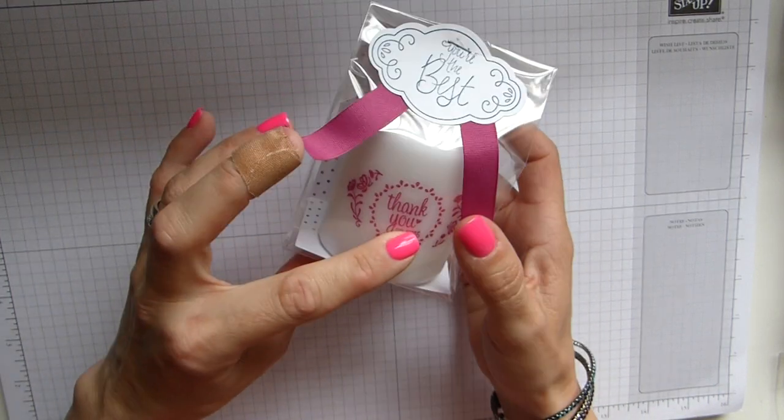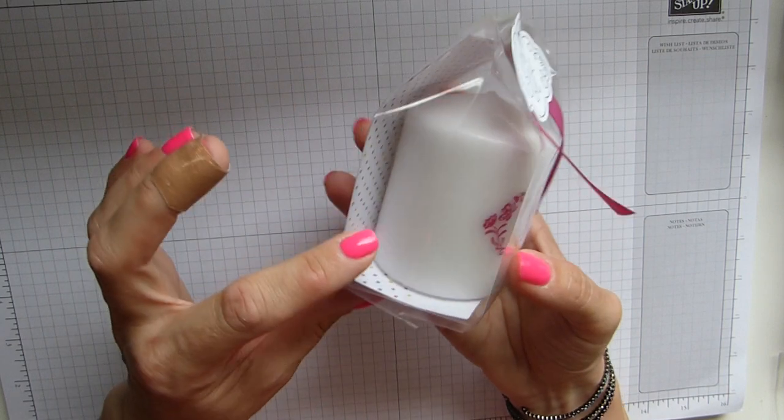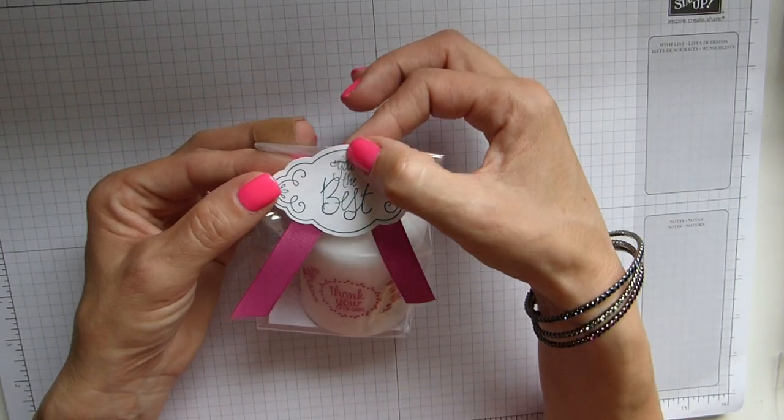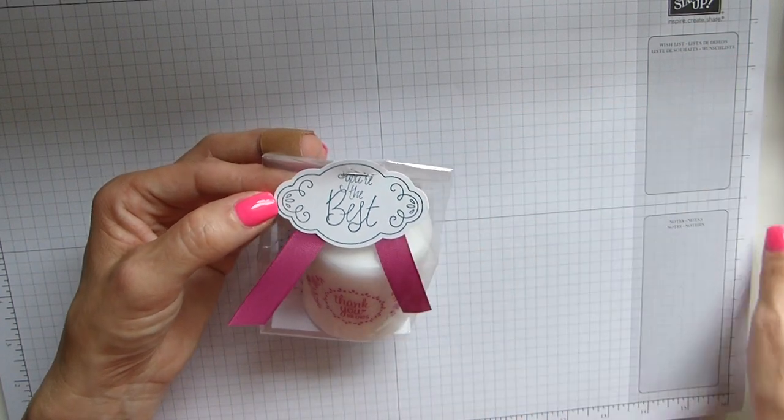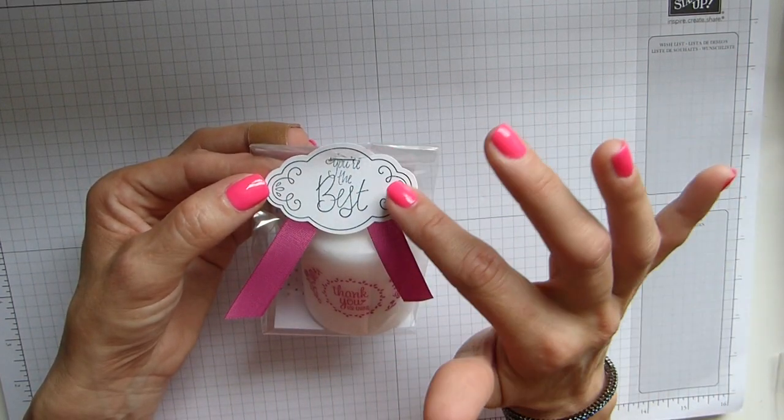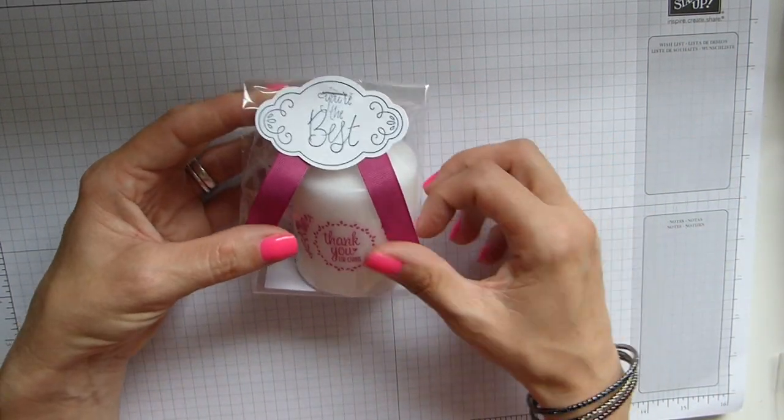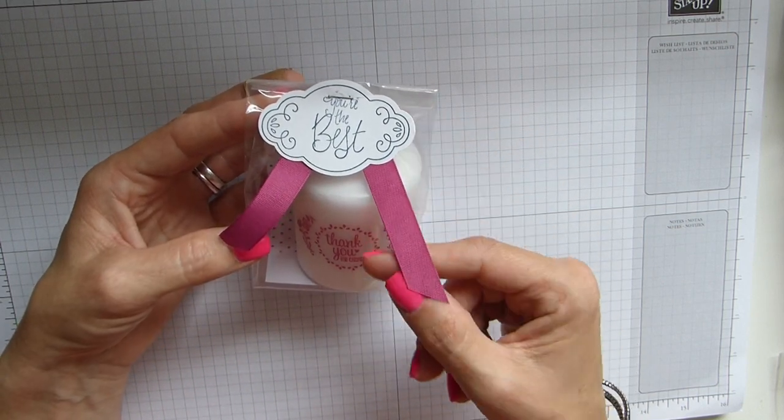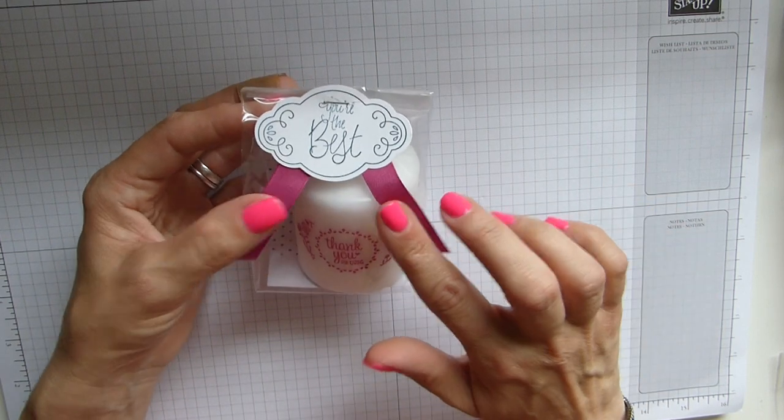As you can see, it's a simple stamped candle inside one of our lovely gusseted cellophane bags. I've used the really cute label me pretty stamp set and the label pretty punch on the top and some of our new ribbon which I didn't realize is almost the same color as my nails.